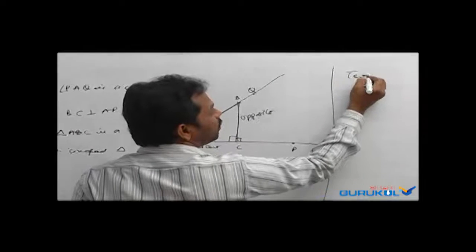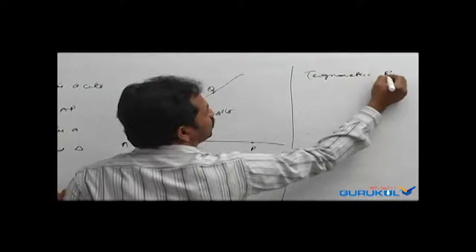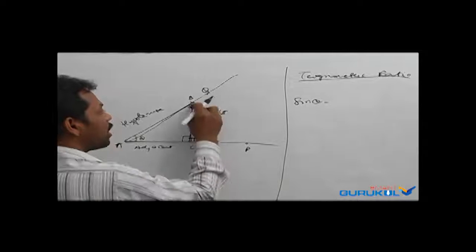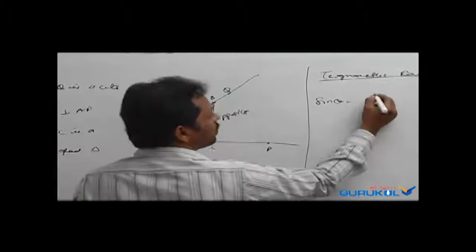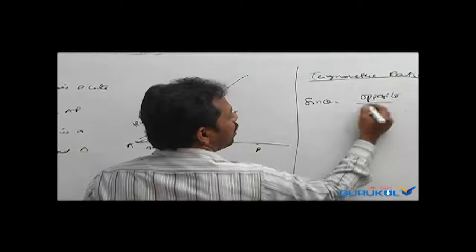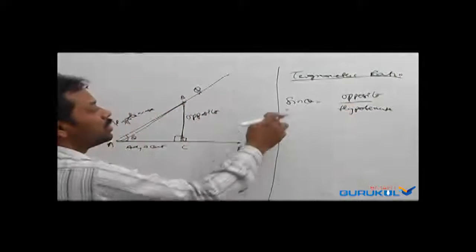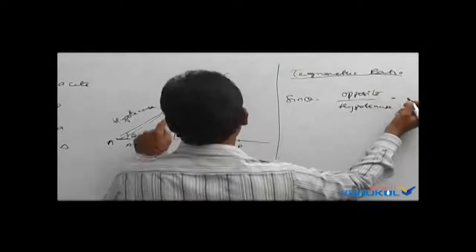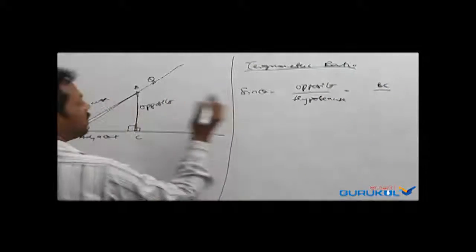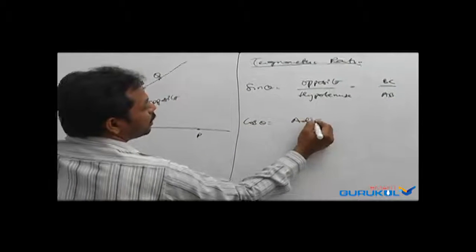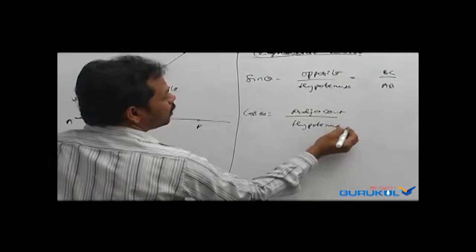The first ratio is sin theta. Sin theta is nothing but opposite by hypotenuse. Opposite by hypotenuse gives you sin theta — that is BC by AB. Cos theta is equal to adjacent by hypotenuse. In this case, the adjacent side is AC, so cos theta equals AC by AB.